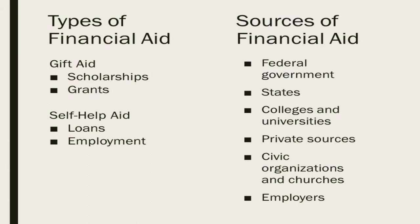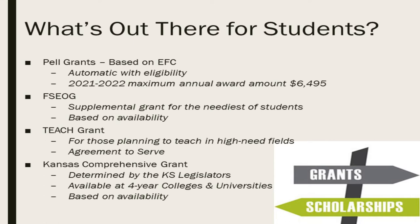There are several different sources of financial aid: the federal government, states, colleges and universities, private sources, and employers. All of these could be sources of financial aid and would possibly need to be reported to the financial aid office.